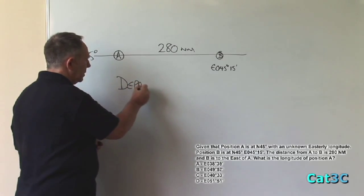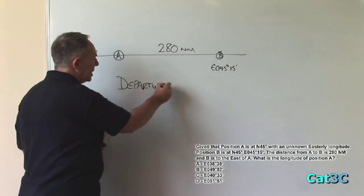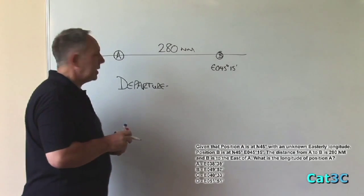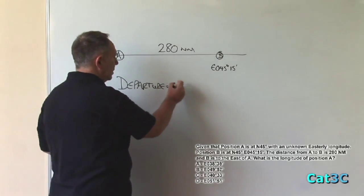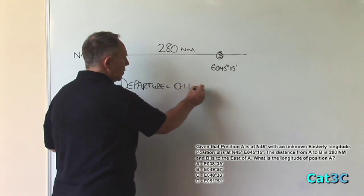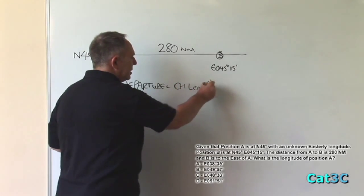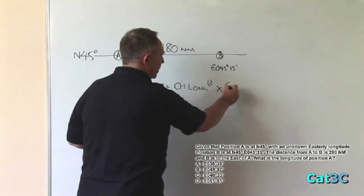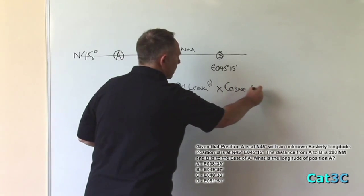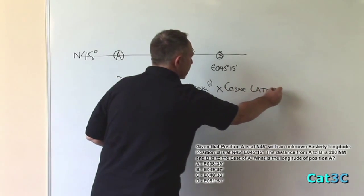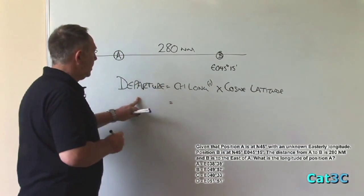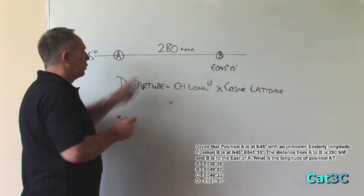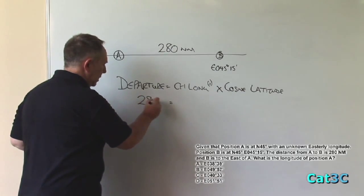And departure, which is the east-west distance along a line of latitude, is equal to the change of longitude in minutes multiplied by the cosine of the latitude. We know the departure. This is the east-west distance in nautical miles. So that's 280.